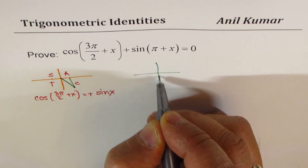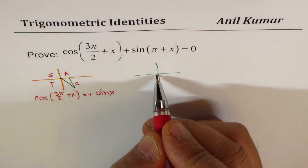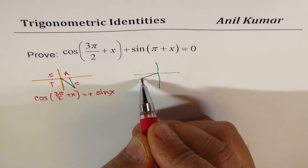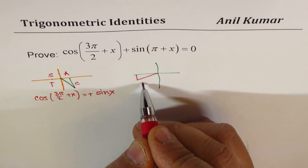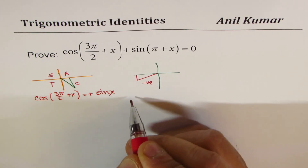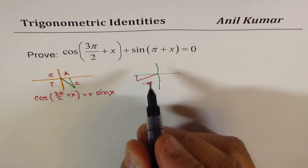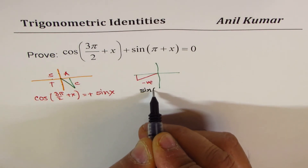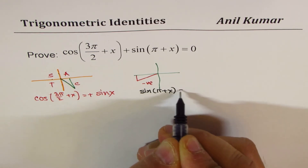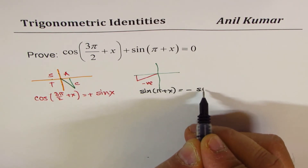On the other hand, sin(π + x): π + x means you are in quadrant 3. In quadrant 3, sine is negative. Since sine is negative there, sin(π + x) equals negative sin(x).